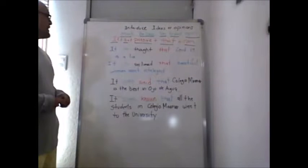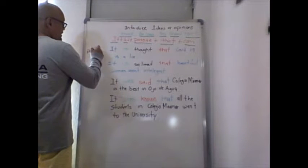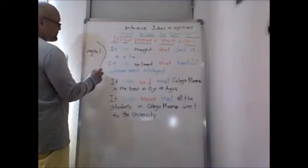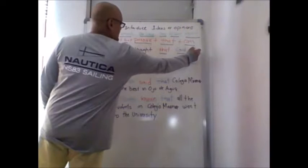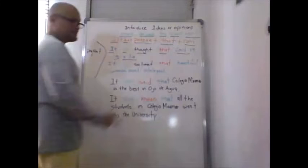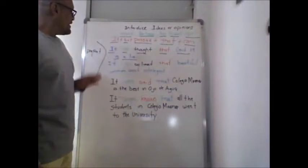Example in the present. In the present we use: It was thought that COVID-19 is a lie. That means it's your opinion that it's not true, that people invented it, that the government said.